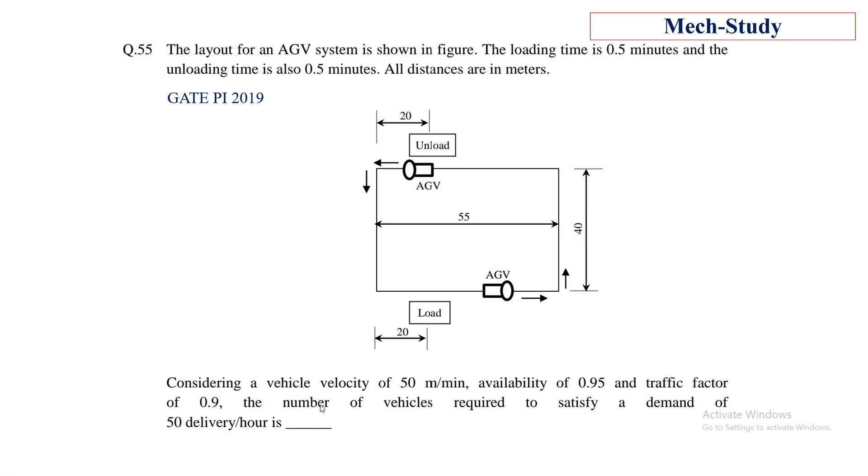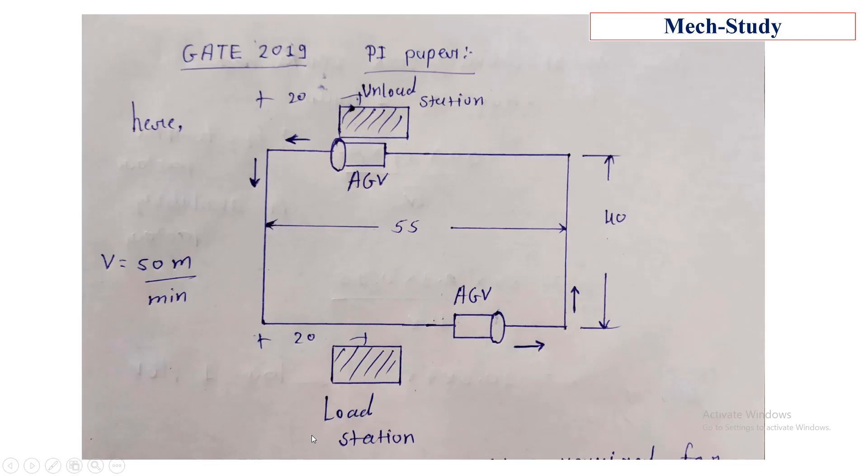Basically, they ask how many AGVs are required to fulfill the demand of 50 deliveries per hour. Let me first see the path of the AGV. Here we can see the path of the AGV.